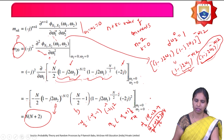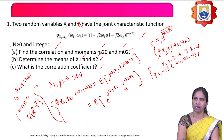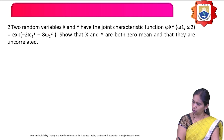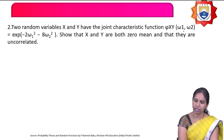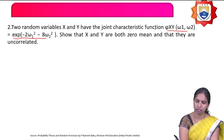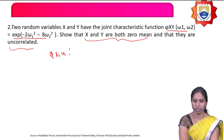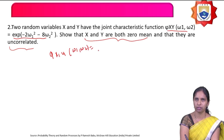If they give the characteristic function, you can calculate the moments above the origin, the means, variances, correlation, covariance, and correlation coefficient. For the next problem: two random variables x and y have the joint characteristic function φ_{xy}(ω1, ω2) = e^(−2ω1² − 8ω2²). Show that x and y are both zero-mean and uncorrelated random variables.